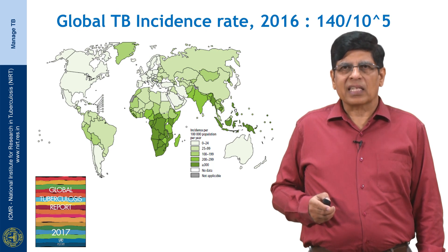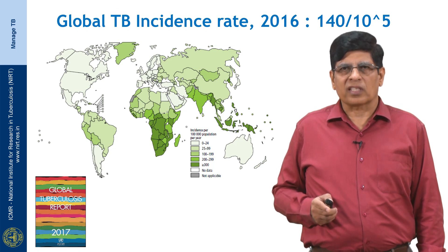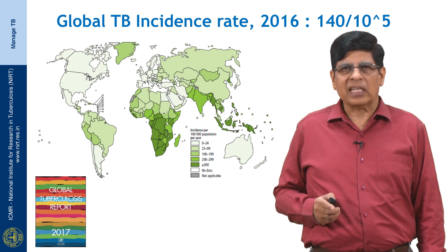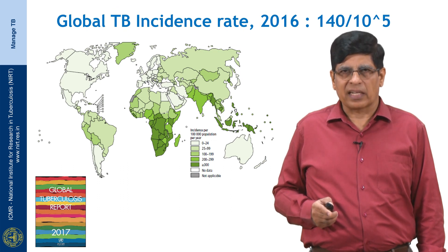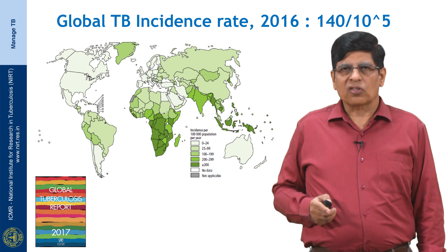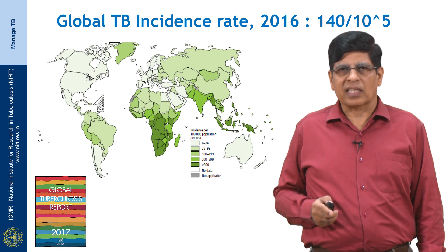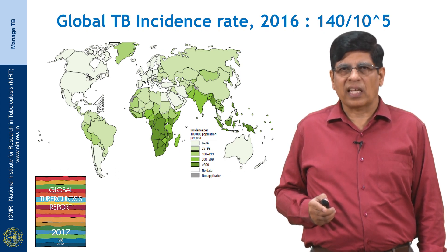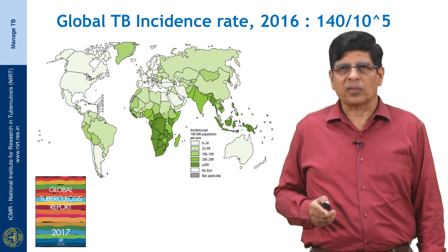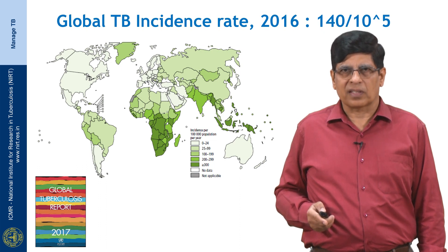At the global level, the incidence rate per 100,000 population was 140, while it was in excess of 210 in India. However, in some countries in the African region, specifically sub-Saharan Africa where HIV is highly pandemic, incidence rates in excess of 300 per 100,000 were observed.